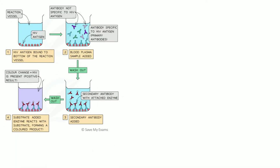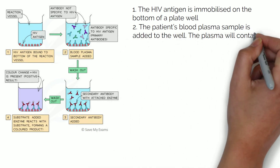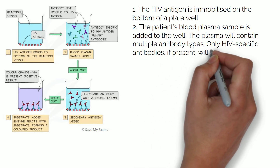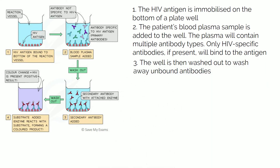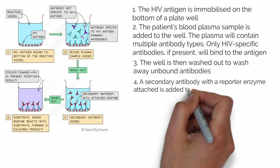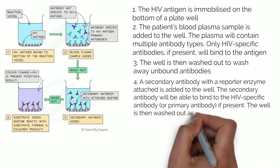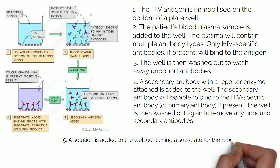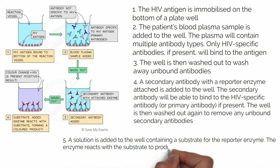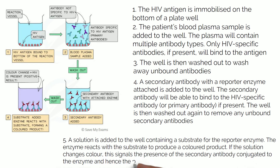The test for HIV uses this principle for diagnosis. First, the HIV antigen is immobilized on the bottom of the plate well. The patient's blood plasma sample is added to the well. The plasma will contain multiple antibody types, and only HIV-specific antibodies, if present, will bind to the antigen. The well is then washed out to remove any unbound antibodies. A secondary antibody with a reporter enzyme attached is added to the well. The secondary antibody will be able to bind to the HIV-specific antibody, or primary antibody, if present. The well is then washed out again to remove any unbound secondary antibodies. A solution containing a substrate is added to the well; the enzyme reacts with the substrate to produce a coloured product. If the solution changes colour, this signals the presence of the secondary antibody conjugated to the enzyme, and hence the presence of HIV antibodies in the patient's blood.